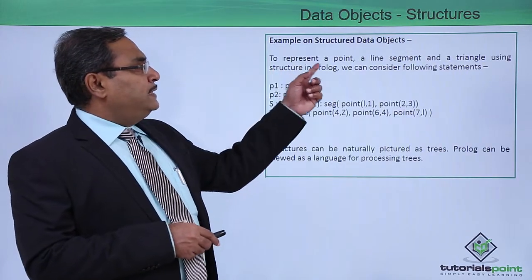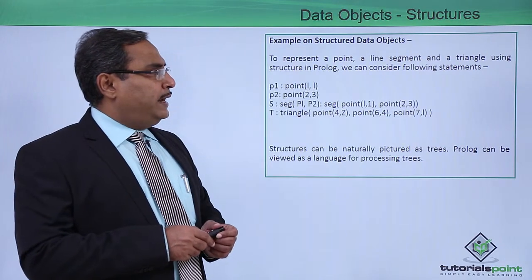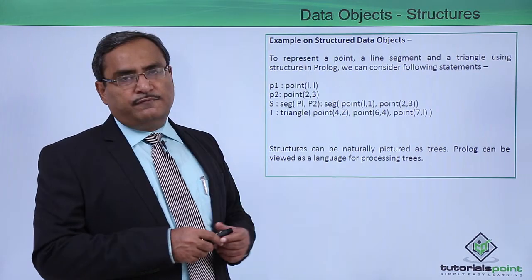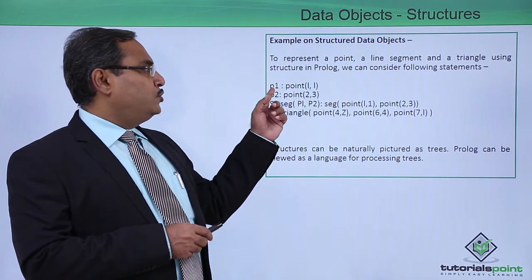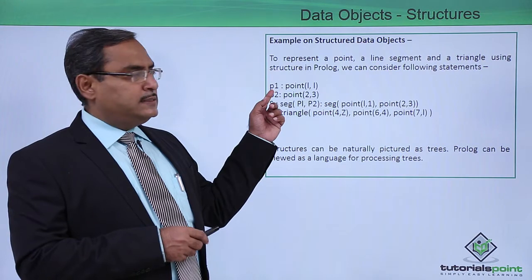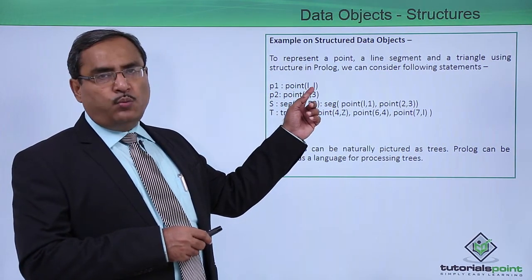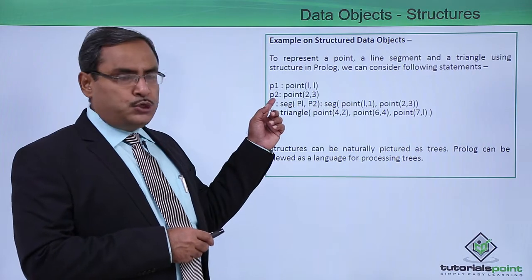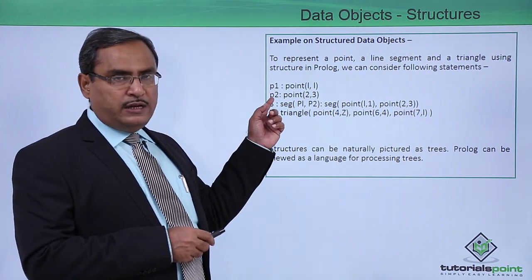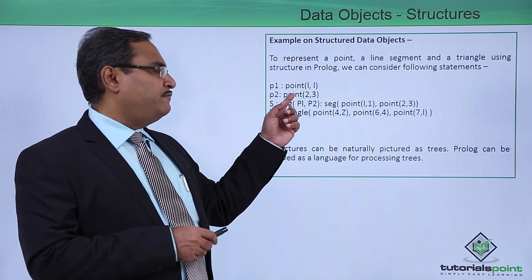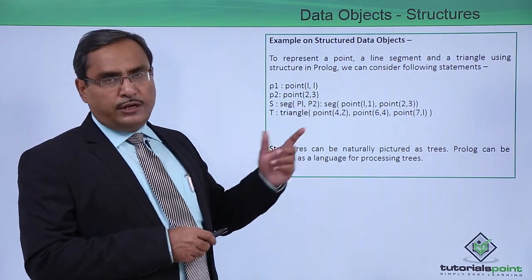To represent a point, a line segment, and a triangle using structures in Prolog, we can consider the following statements. Point P1 can be represented using the functor point with X and Y as 1, 1. P2, which is a structure variable, can represent this point. That is the functor name, and 2 and 3 are the two arguments.